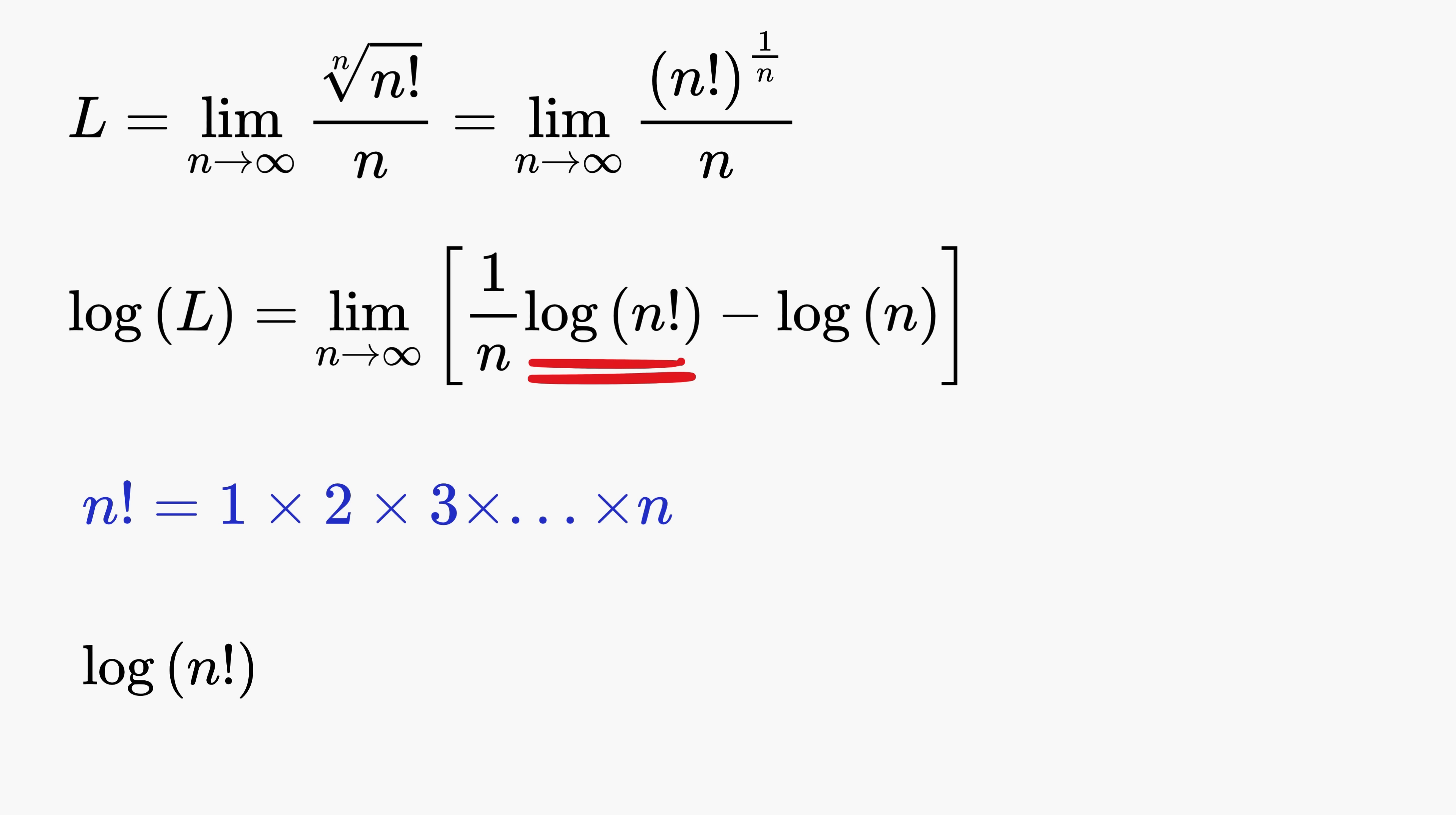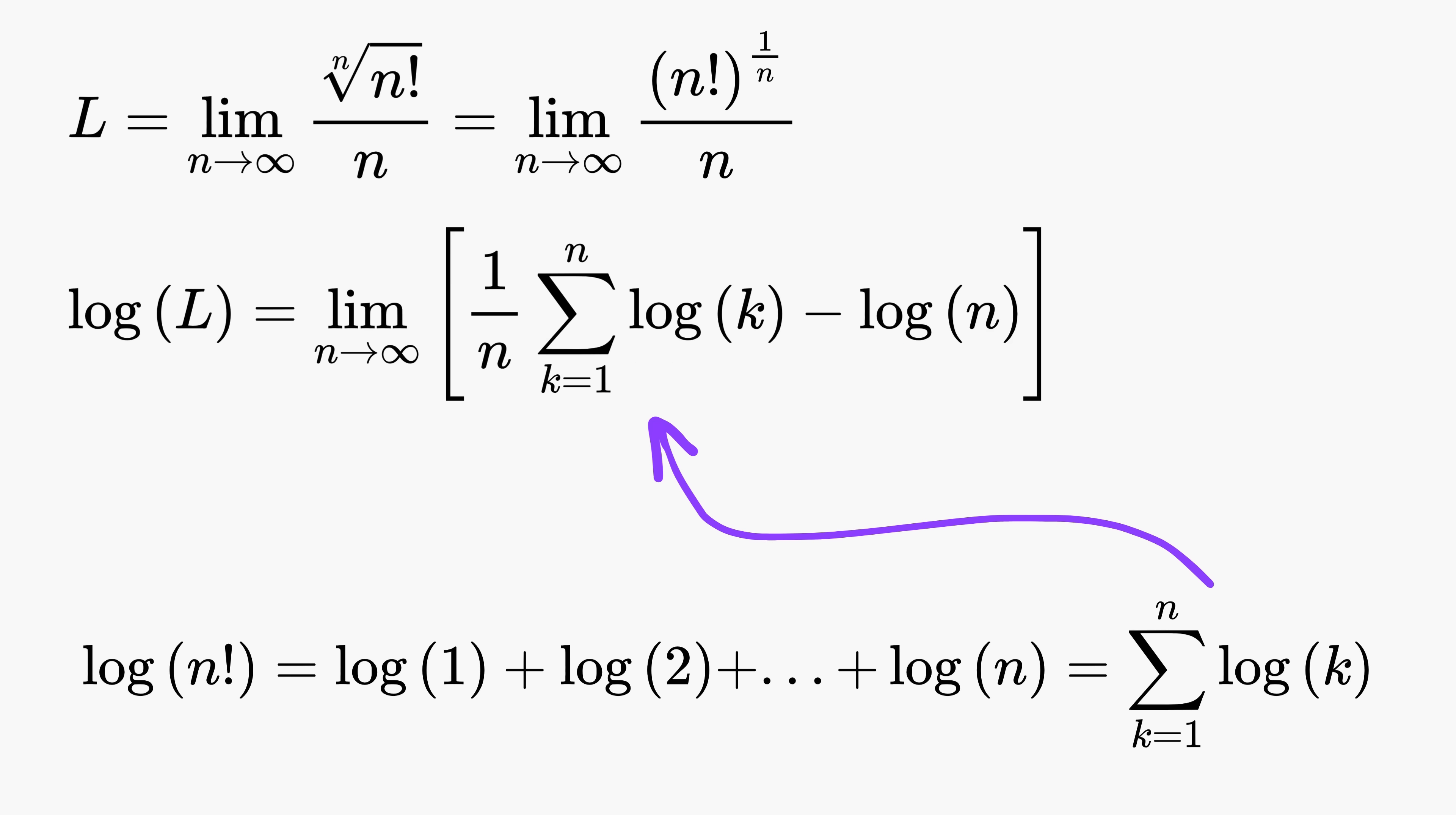So what comes to our mind now? Yes, we will use the product rule of logarithm, where log(n!) turns into a sum of logs starting from log(1), then log(2), and continuing all the way up to log(n). In compact form, this can be written as a summation log(k) where the index k runs from 1 to n. We now substitute this summation back into our expression.